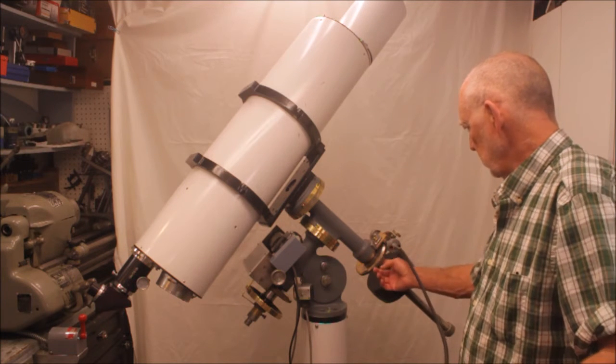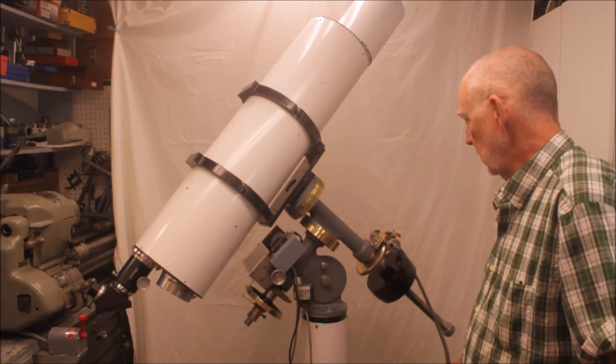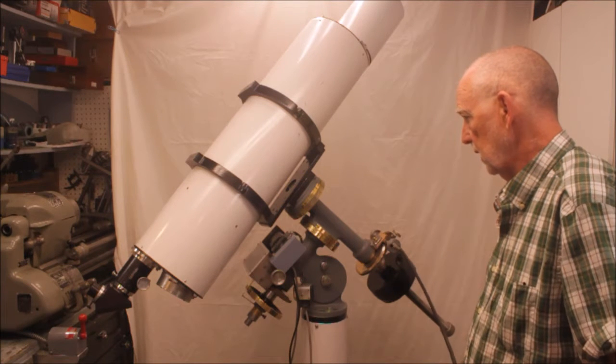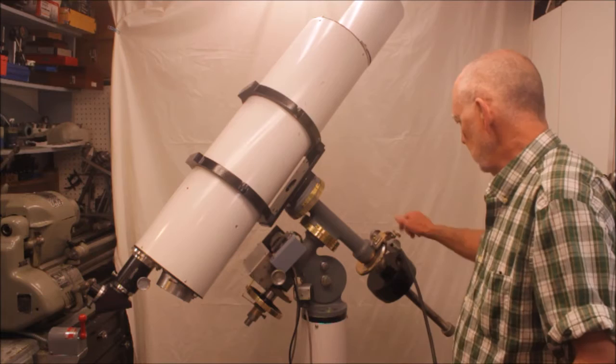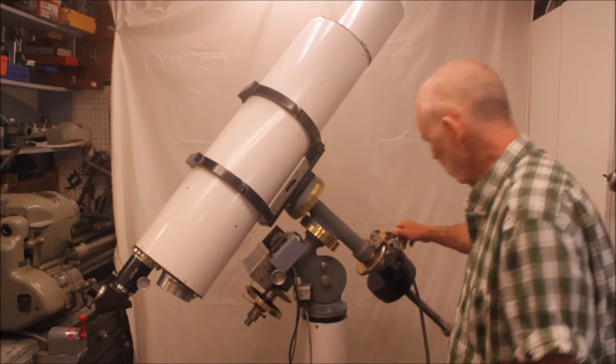There's the that's a lock for the declination and then this is the declination slow motion. The clutch is a little bit loose. You can probably see it moving slightly in declination.